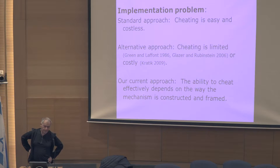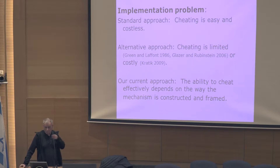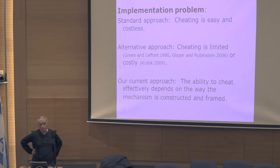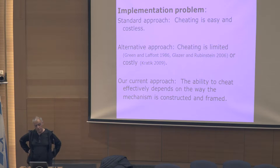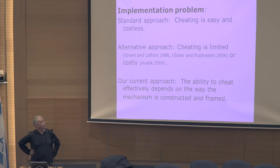Now we can think about this as an example of a model of bounded rationality. My definition of bounded rationality is that it's a model which refers explicitly to procedural aspects of decision making. Of course, we can think about it as such a model or some procedure we can insert into many models. Here, because of some personal interest of Kobi and me, we are within what is called the implementation literature. The standard approach in that literature is that cheating is easy and costless, but there are some alternative approaches where cheating is probably costly or limited.